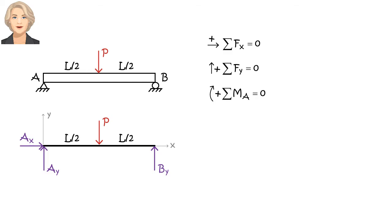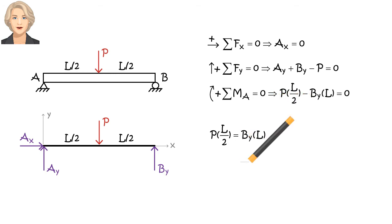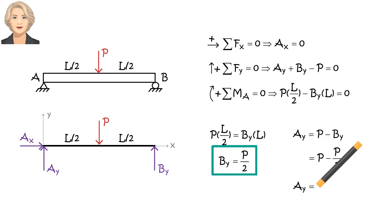The first equation in the expanded form gives us AX equals zero. The second equation gives us AY plus BY minus P equals zero. The third equation gives us P times L divided by 2 minus BY times L equals zero. Solving the third equation for BY gives us BY equals P divided by 2. Solving the second equation for AY gives us AY equals P divided by 2.